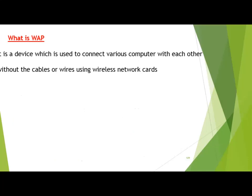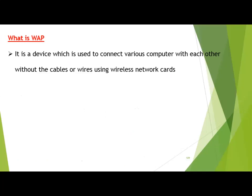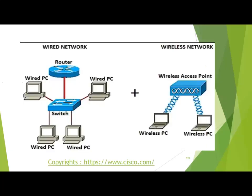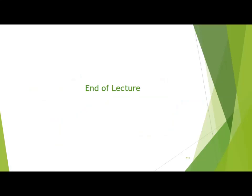What is a WAP (Wireless Access Point)? It is a device used to connect various computers with each other without cables or wires using a wireless network card. If you want to set up a wireless LAN, you need a WAP device. WAP is also built into laptops, and using this device wireless LAN can be established and internet can be accessed. Here you can see two pictures showing how WAP is used — a switch connects different computers and also connects to the router, and the wireless access point establishes a wireless LAN.